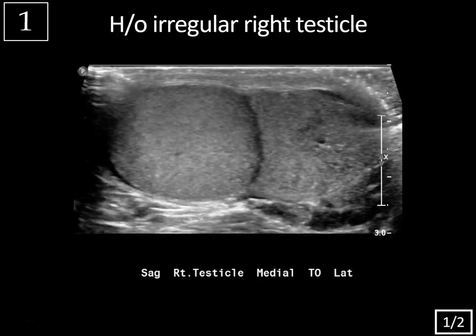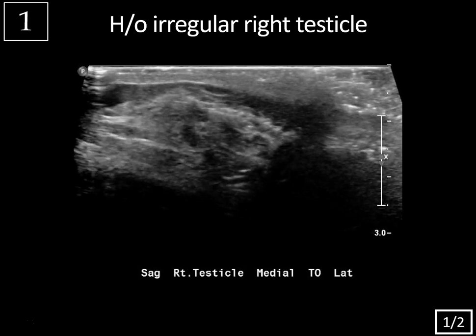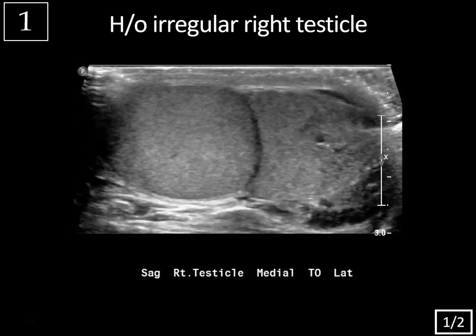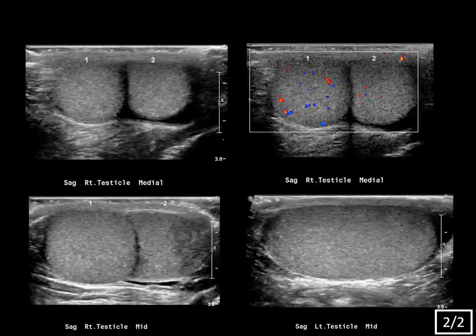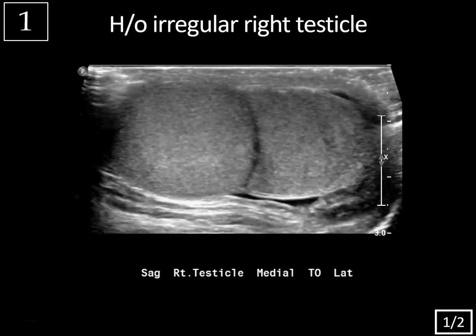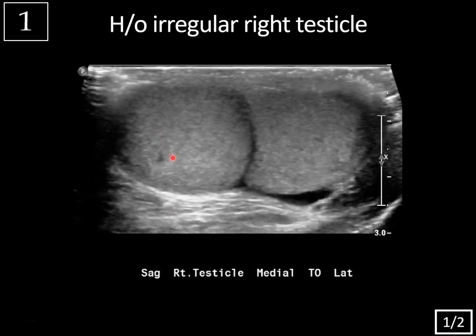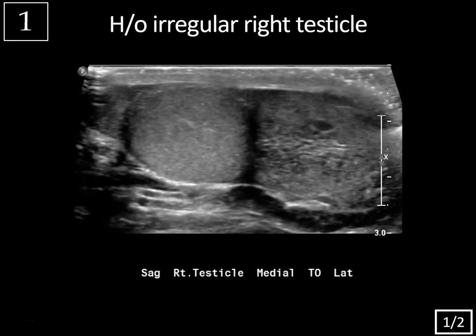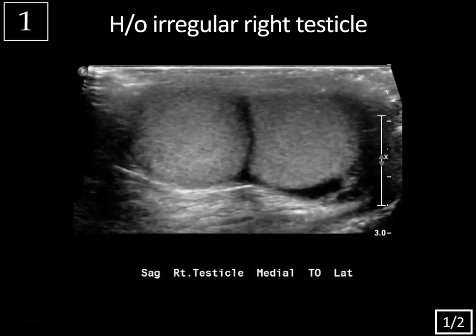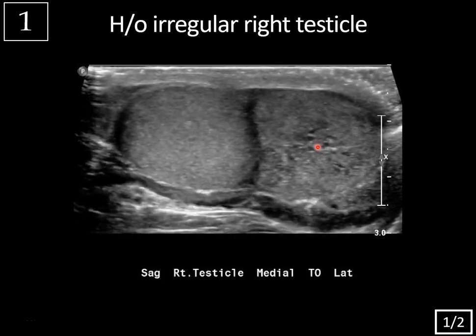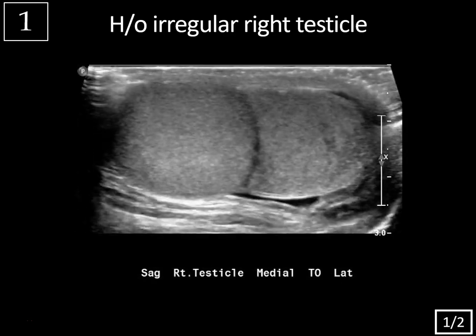Case 1: History of irregular right testicle, CineClip, slides 1 and 2. On this sagittal cine clip of the right scrotum, you can see that there's a normal appearing testis here, and then there's another testis with mass effect against it. There's also a tubular cystic area within the area of this testicular mediastinum, indicating tubular ectasia of the rete testis.